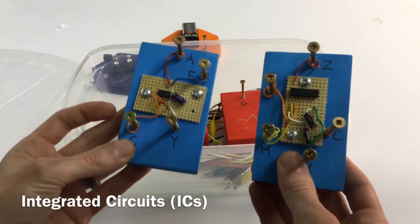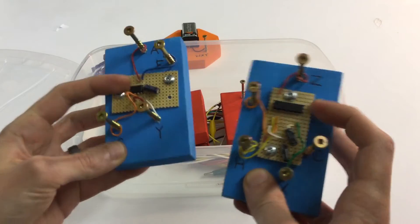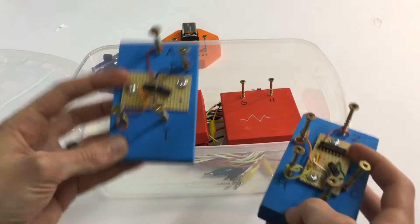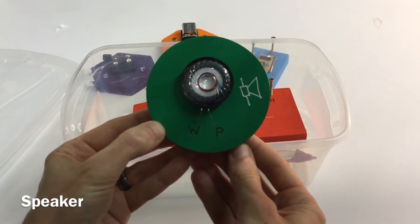These two things are called integrated circuits because they have these chips. This one controls the pitch, this one controls the volume, this is your speaker.